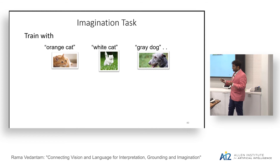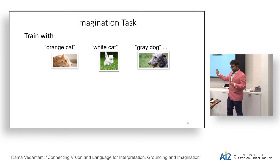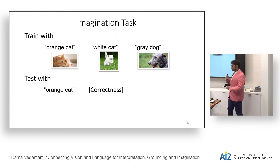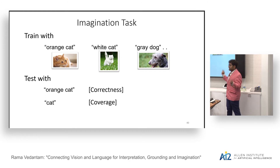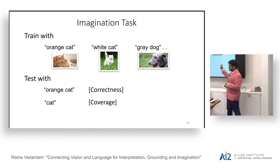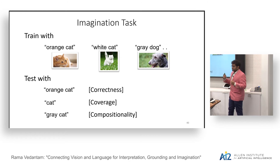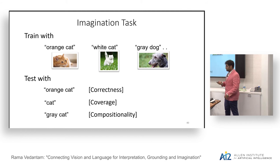And if I said 'purple cat,' even though you've never seen one, we can all imagine how it might look — that captures compositionality. Together, these are the three C's of visual imagination: correctness, coverage, and compositionality. Formally, we train with concepts like 'orange cat,' 'white cat,' 'gray dog,' and corresponding images. At test time, we require generating the correct image for 'orange cat' — correctness — but for just 'cat,' it should span different plausible kinds of cats — coverage. And for 'gray cat,' unseen during training, we want compositionality.